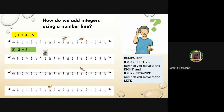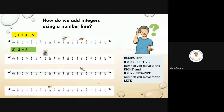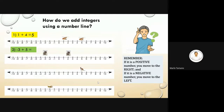Next, number two: negative three plus five. Our rabbit moved five units to the right. So the answer is two.